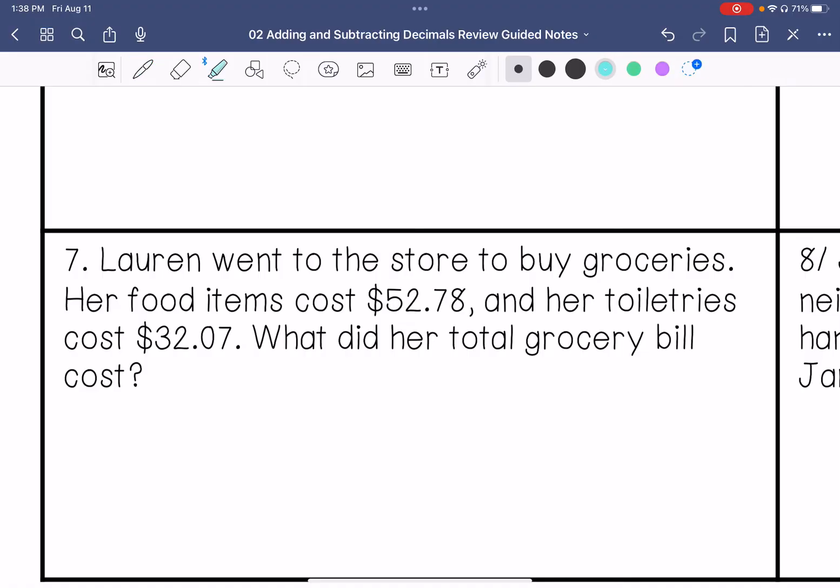Lauren went to the store to buy groceries. Her food items cost $52.78. Her toiletries cost $32.07. What is our total grocery bill cost? Our keyword total tells us we're adding. So we have $52.78 plus $32.07. 8 plus 7 is 15, 7 plus 1 is 8, 2 plus 2 is 4, and 5 plus 3 is 8. Bring the decimal point down. So her grocery bill total was $84.85.